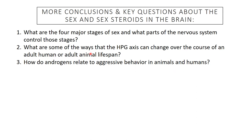Here are some key questions about sex and steroids in the brain. First: what are the four major stages of sex and what parts of the nervous system control those stages? Second: what are some of the ways that the HPG axis can change over the course of an adult human or animal lifespan — from fertilization, what happens in utero, during juvenilehood, in adulthood, with the furnace turning off and on throughout development? And third: how do androgens relate to aggressive behavior in animals and humans? Stay tuned for the second part of lecture 18, which will be on the hippocampus.